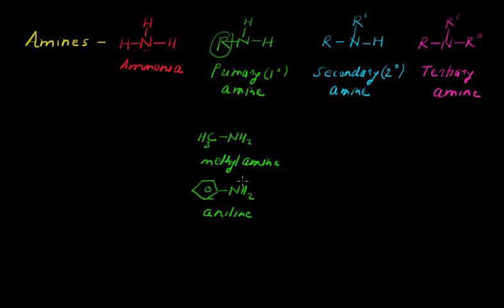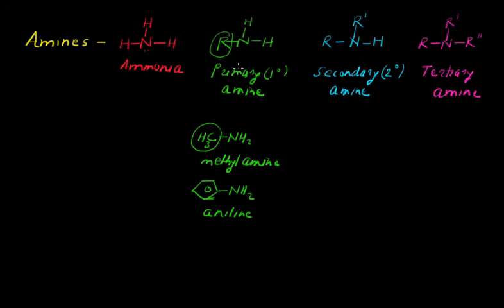Aniline is also a primary amine. You can see the difference between these two examples: in the first case, CH3 is the alkyl methyl group, while in aniline, one hydrogen is replaced by the phenyl or benzene ring. That is why aniline is an aromatic amine, and methylamine is an aliphatic amine — both are primary amines.